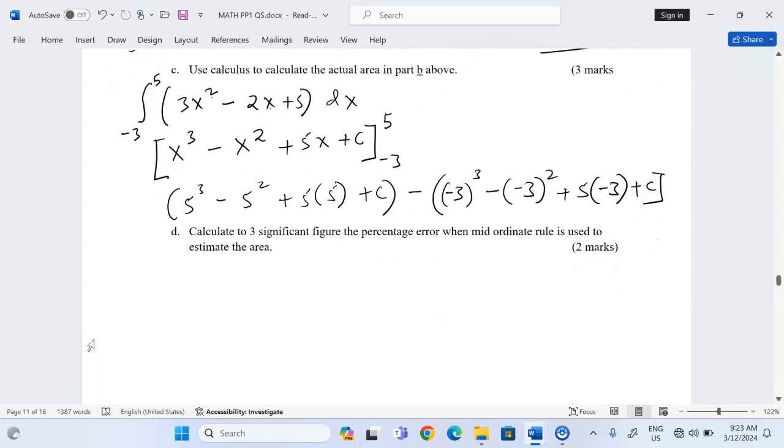We're going to have the value here, when you compute with a calculator, you'll get 125 minus negative 51. Remember, there is a constant in both sides, therefore it will cancel. This becomes an addition and we shall have 176 square units. 176 square units is the exact area, the exact area by integration.